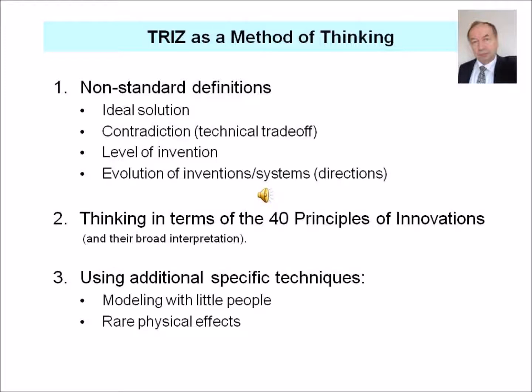Working with the workbook changes how inventors view their tasks. They look at tasks from the point of view of an ideal solution, contradiction, level of invention, and the evolution of inventions and systems. They think in terms of the 40 principles of innovation and may use additional specific techniques — in particular, rare physical effects, which lead to inventions of the highest level, level 4.